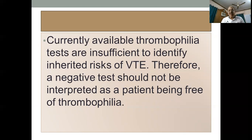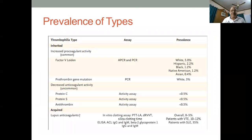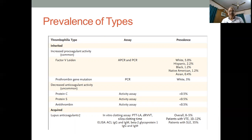Currently available thrombophilia tests are insufficient to identify the inherited risk of VTE. Therefore, a negative test does not mean the patient does not have thrombophilia. Regarding prevalence: factor V Leiden, caused by activated protein C resistance, is around five percent in the white population but less than one percent in the Asian population. Prothrombin gene mutation is more common in whites than Asians. Protein C, protein S, and antithrombin overall prevalence is less than 0.5 percent, and in the acquired group, antiphospholipid antibody variety is also less than 0.5 percent.